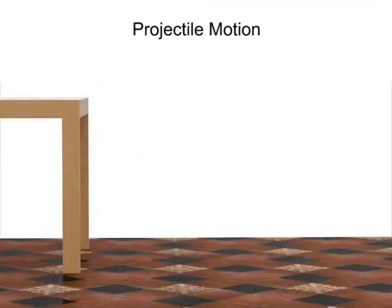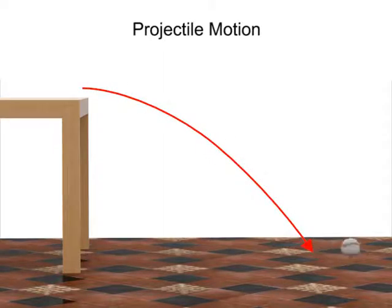To better understand the nature of projectile motion, consider a ball rolling off a table. Notice that as the ball leaves the table and falls through the air, its path follows a downward arc.